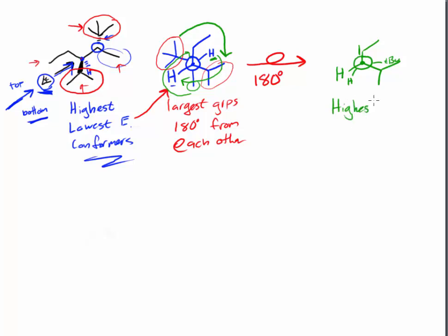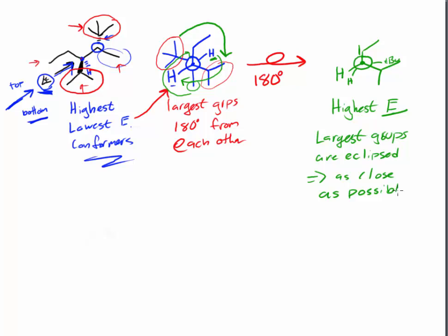This is the highest energy conformer because the largest groups are eclipsed, meaning they are as close as possible. If you make a model of the original structure and rotate around the middle carbon-carbon bond, you'll find the large groups go from being as far apart as possible to as close as they can get. They're never actually touching, but they are closer in space, causing more steric interaction and raising the energy of our alkane.